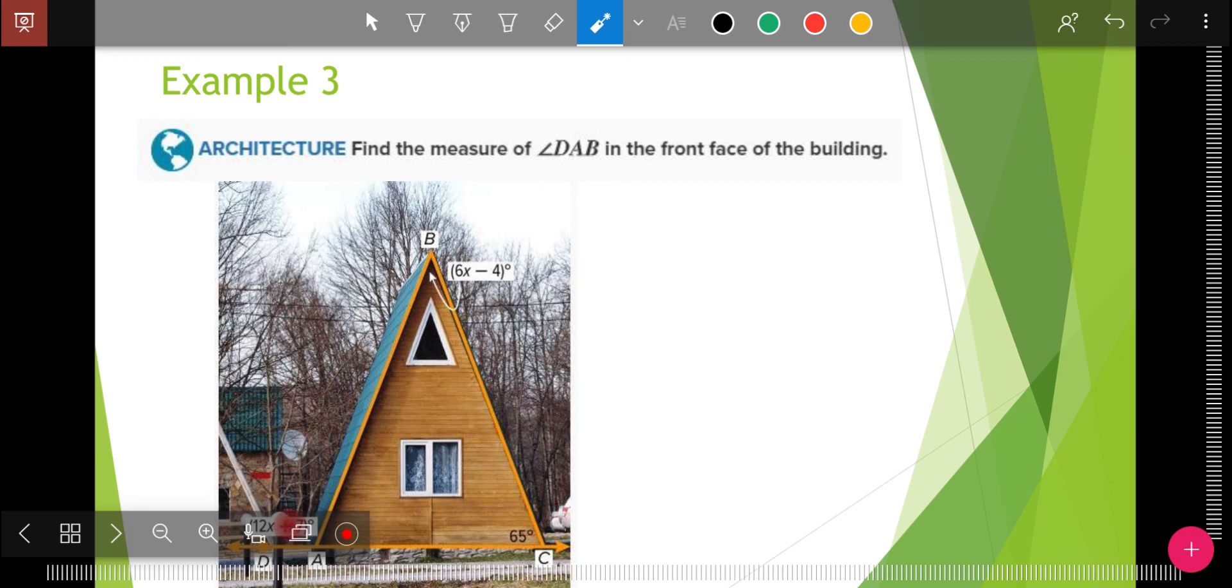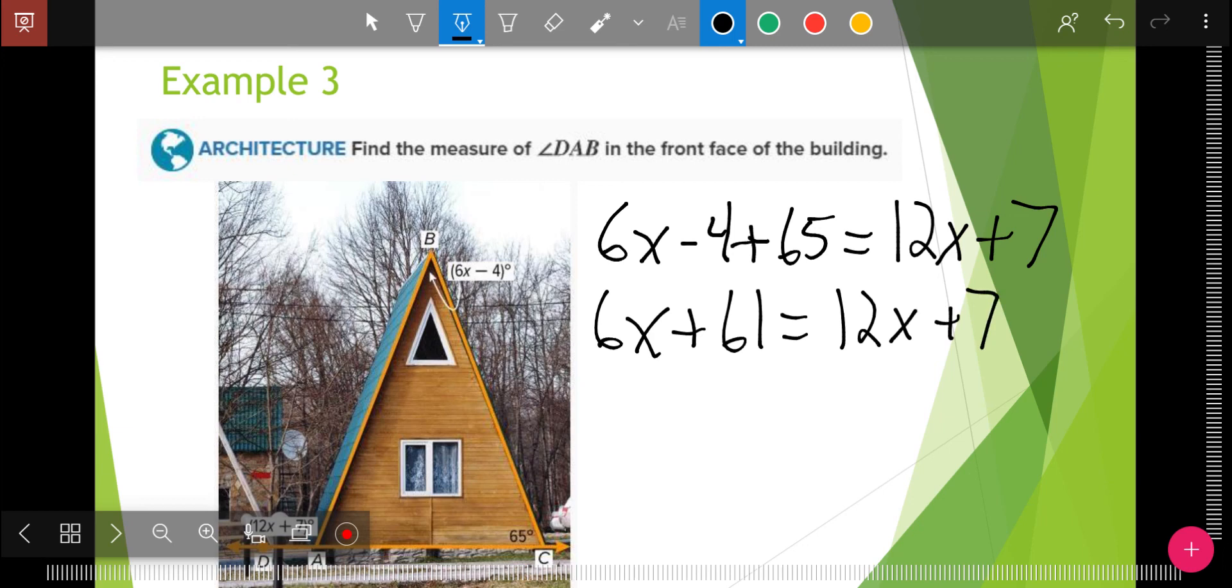My example of this is this angle down here on the outside, 12x plus 7, is equal to the two on the inside that don't touch it added together. So 6x minus 4 plus 65 equals 12x plus 7. That gives me 6x plus 61 equals 12x plus 7. I'm going to subtract 6x from both sides. I'm going to subtract 7 from both sides. I'm going to divide both sides by 6. And I have x equals 9.